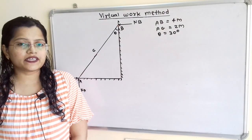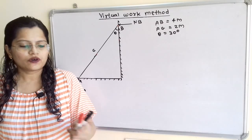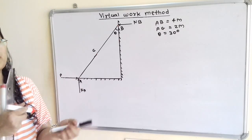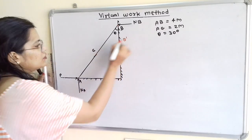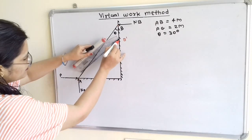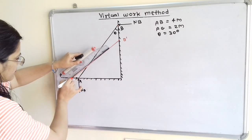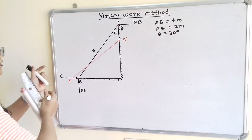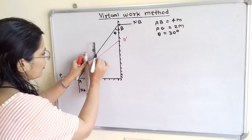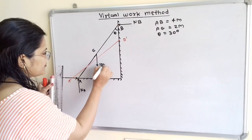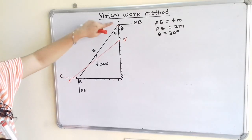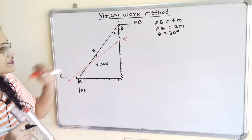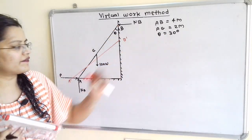We will consider a small displacement of the ladder. Point B will move along the vertical line in the downward direction, giving new position B dash, and the new position of point A is A dash. At point G there is a 100 N force acting in the downward direction. Distance A to B is 4 meters, distance A to G is 2 meters since G is the midpoint, and angle theta equals 30 degrees.